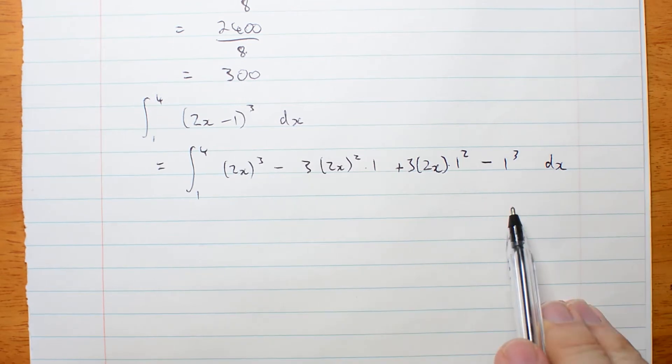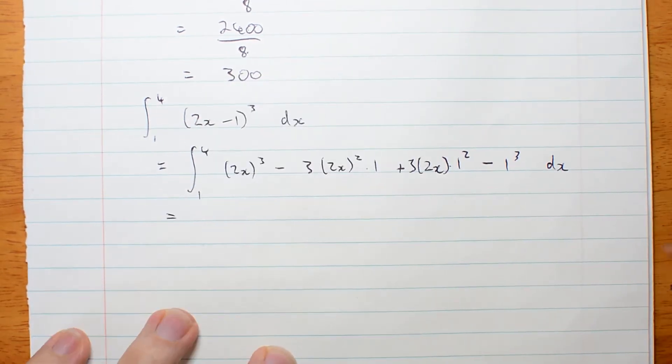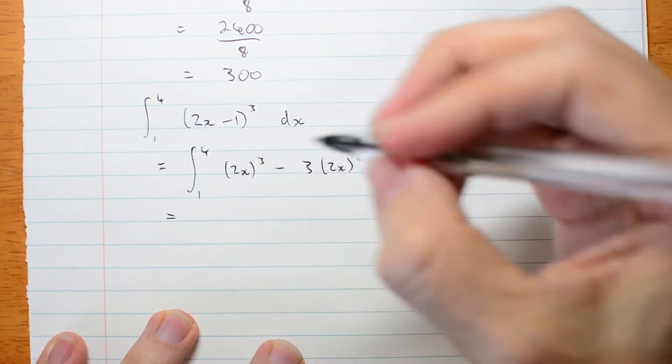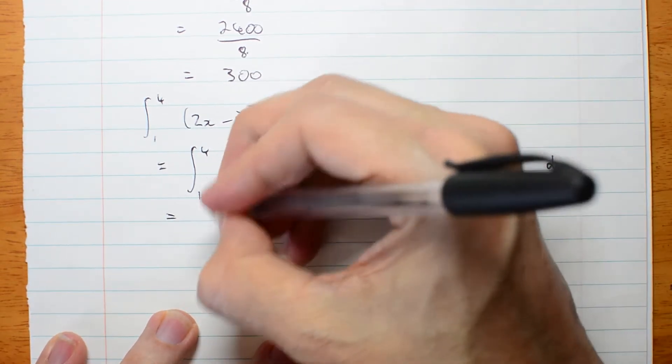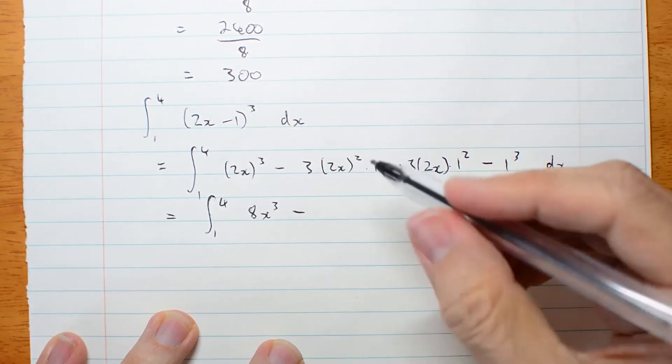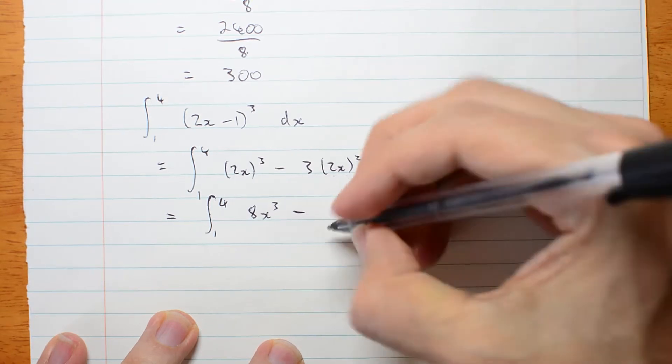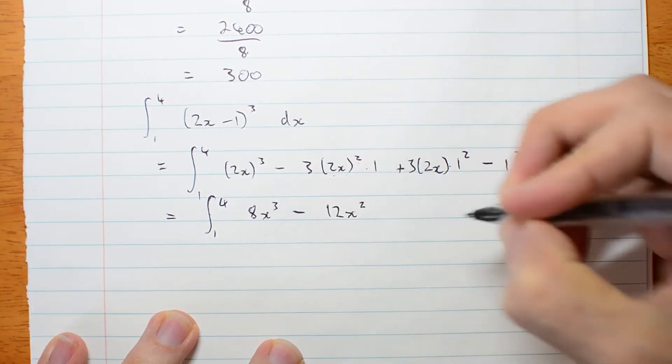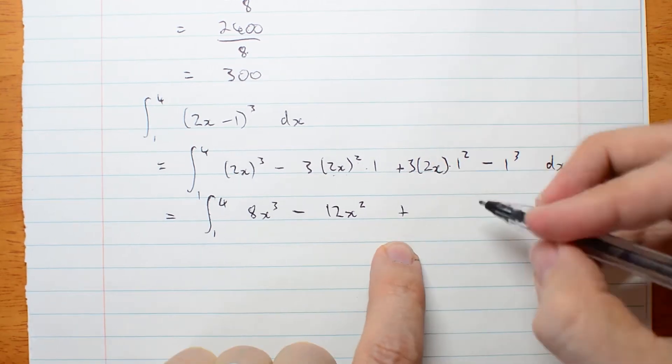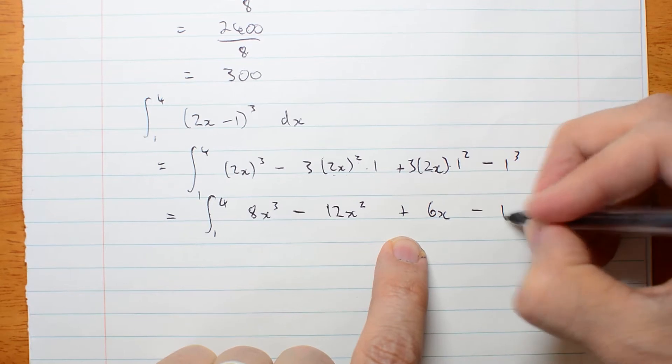Now, that's longer and messier, but I believe it should get us the same answer. Let's try it. First, I'm going to expand those cubes. So I'm still going 1 to 4 of 8x cubed minus, this is 4x squared times 3, which is 12x squared plus, this is 6x minus 1.